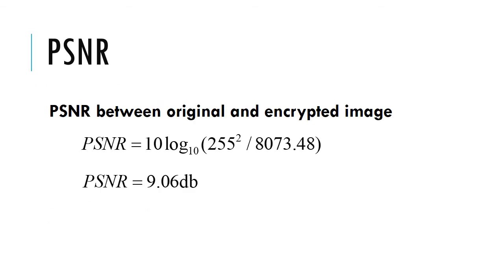Let us consider the example taken in the previous video. The MSE value between the original and the encrypted image was 8073.48, and therefore the PSNR value between these two images is 9.06 dB.